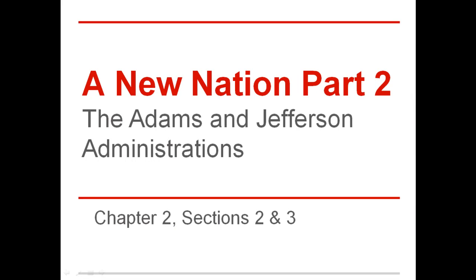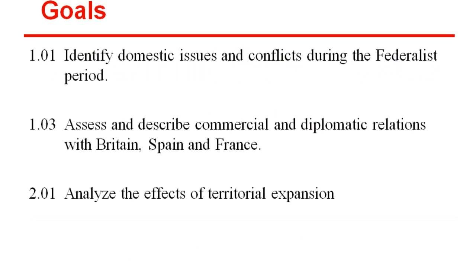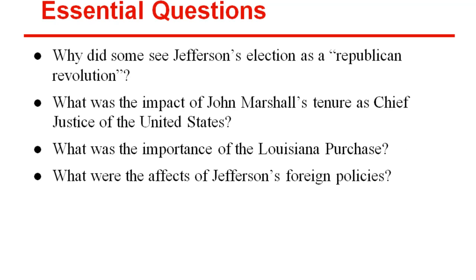This is 'A New Nation, Part Two.' We're going to talk about the Adams and the Jefferson administrations. This information is all in chapter two of the textbook, sections two and three. We're dealing with goal one for the most part, and we'll touch on objective one — identify domestic issues and conflicts during the Federalist period — as well as objective three — assess and describe commercial and diplomatic relations with Britain, Spain, and France. We'll also touch on goal two, objective one: analyze the effects of territorial expansion.